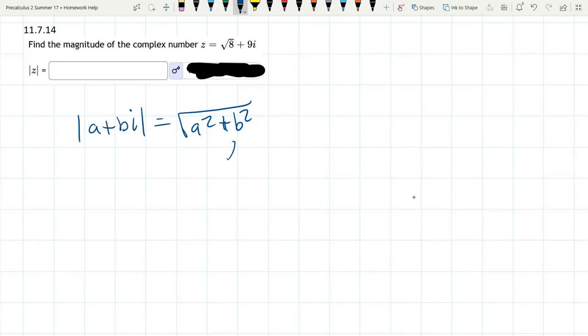Notice the i does not get into the square root; it's the coefficient of i. So our a is square root 8, our b is 9. Just grab that right out of there.